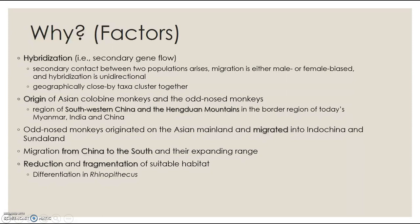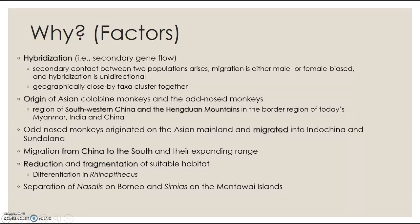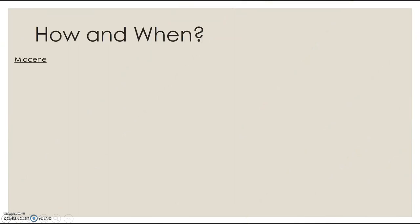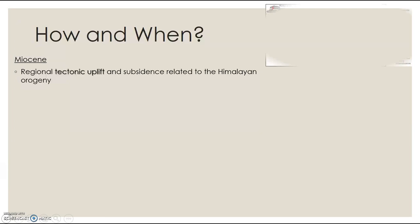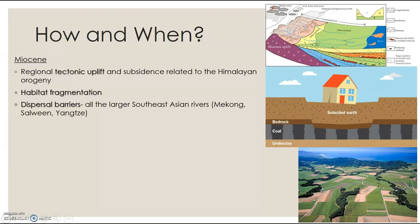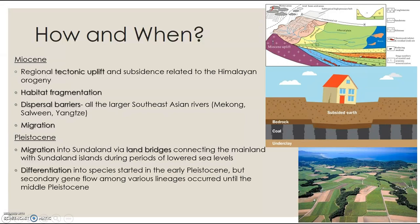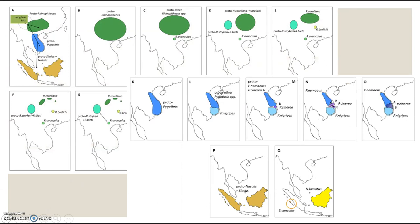The reduction and fragmentation of suitable habitat caused differentiation in Rhinopithecus, and the separation of Nasalis and Simias caused them to diverge. This happened during the Miocene era, when there was regional tectonic uplift and subsidence. Habitat fragmentation drove further divergence, along with dispersal across Southeast Asian river systems. During the Pleistocene era, migration via land bridges during low sea levels caused further differentiation into species, and climate and geological changes along with river course changes shaped the current distribution patterns.